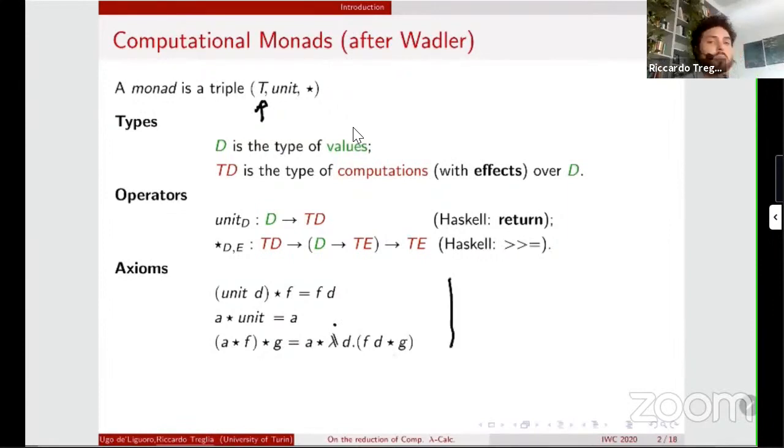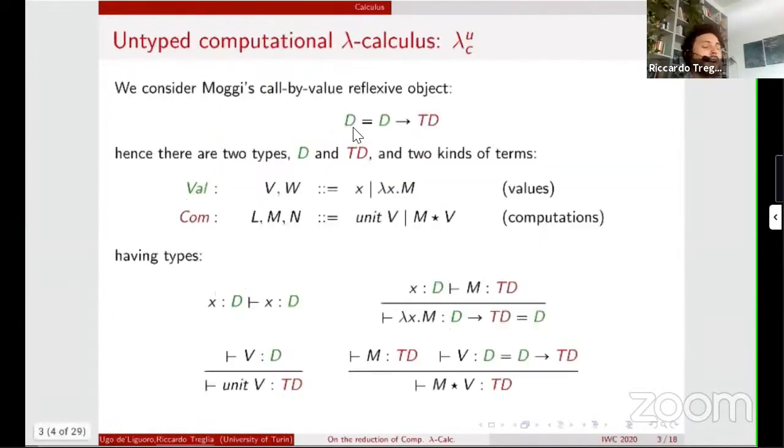Keep in mind these three axioms because we will see them again while talking about our reduction relations. It seems quite nonsense to speak about untyped computational lambda calculus, where both Moggi's and Wadler's definition of monads involves a type construction. As inspired by Scott in the 80s, much of untyped lambda calculus can be seen as typed lambda calculus with just one type. The type that is the retract of the space function,